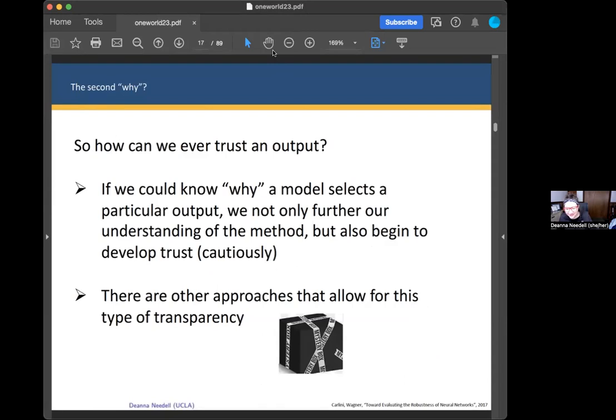So then we get to the darker side of, well, how can we ever trust an output? These neural nets and transformers, all these machine learning methods are being used widespread. So how are we ever going to trust them?